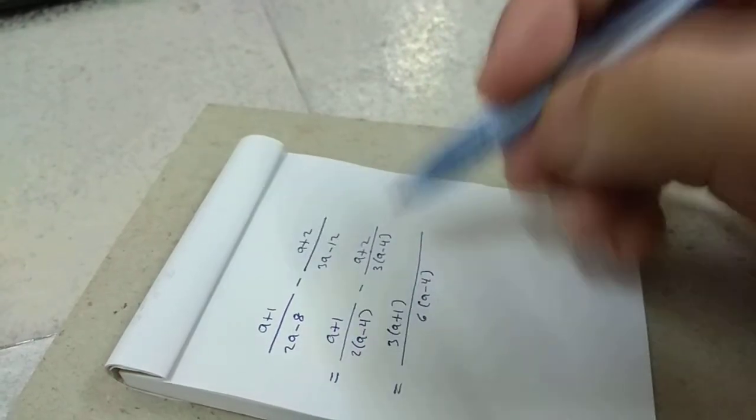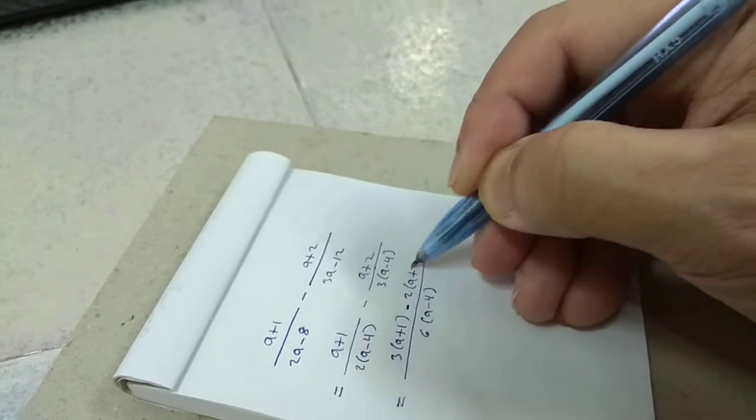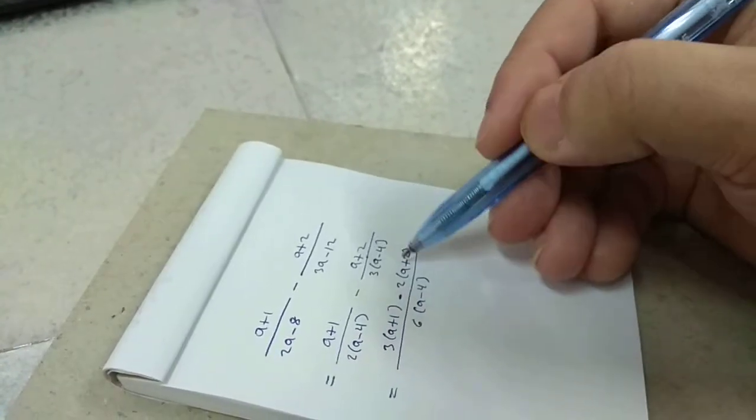And this one, this is equal to, 3 becomes 6, so 2 times a plus 2. So this is equal to this.